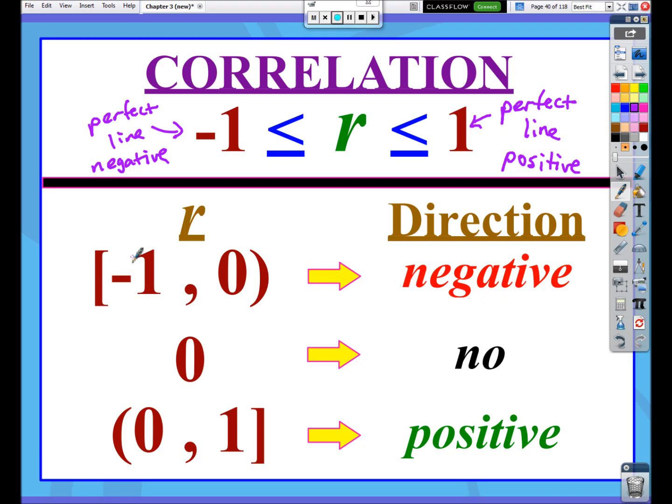So anything from negative 1 down to 0 but not including will be a negative direction. 0 is really no direction. And if you remember what that scatterplot looked like, that's when we just had, like, random points just all over the place. That's 0 correlation.